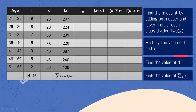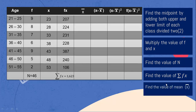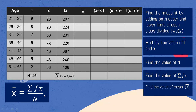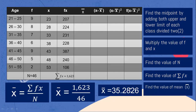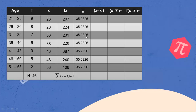Next step: find the value of the mean by dividing the summation of F times X over the total number of distribution. 1,623 divided by 46 gives us the mean. The mean is 35.2826. We now place this mean value in the corresponding column for all class intervals.